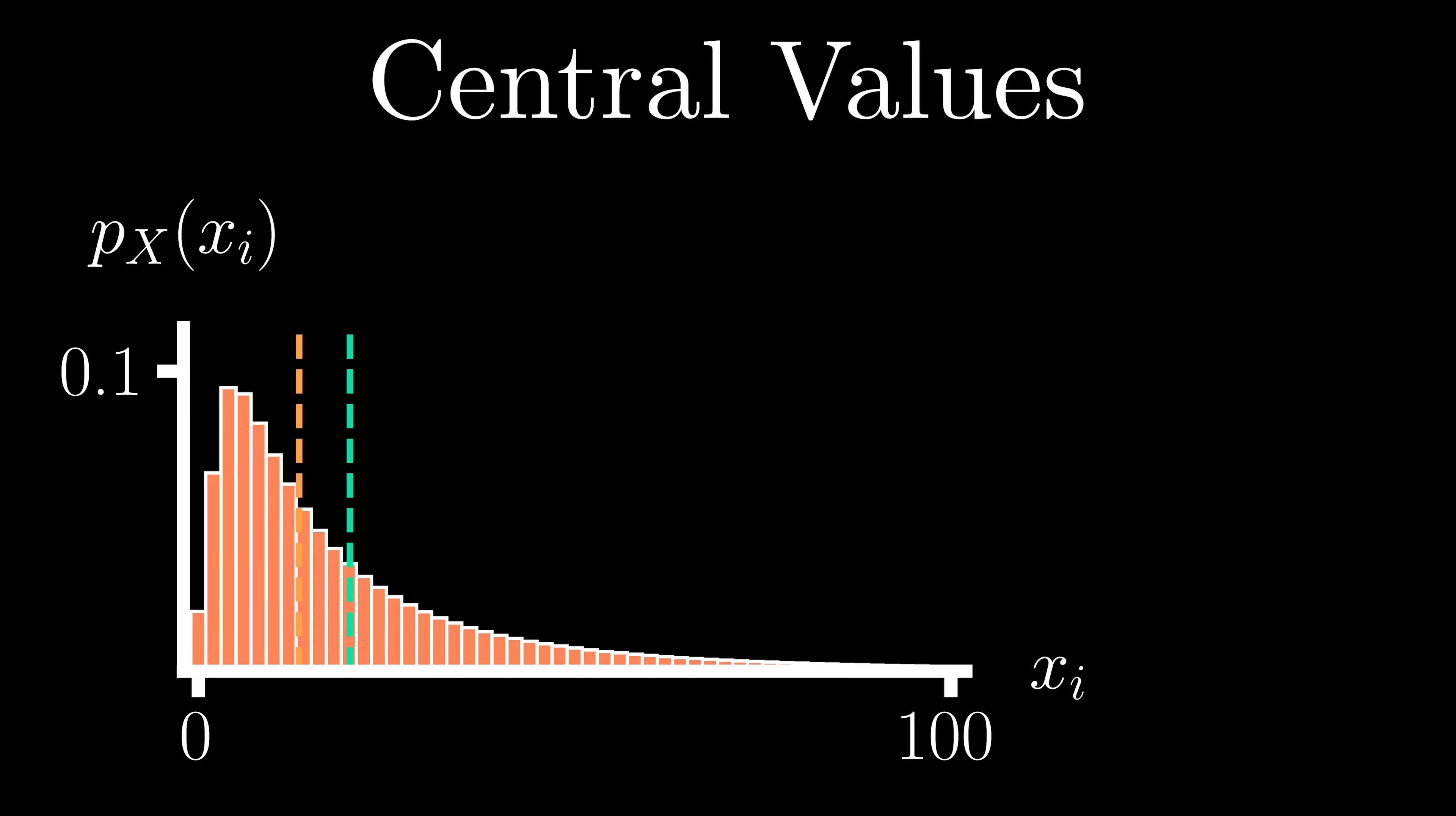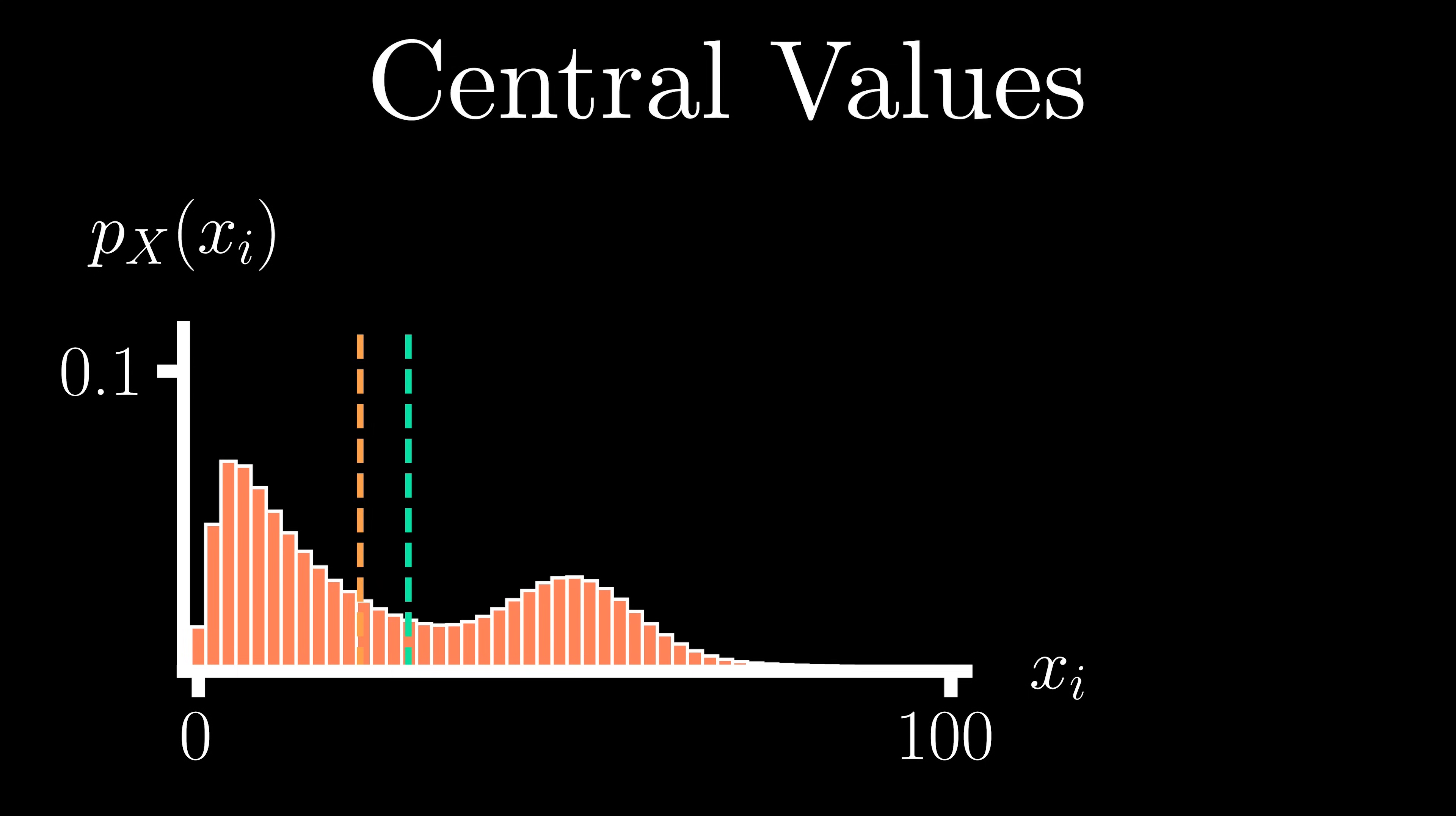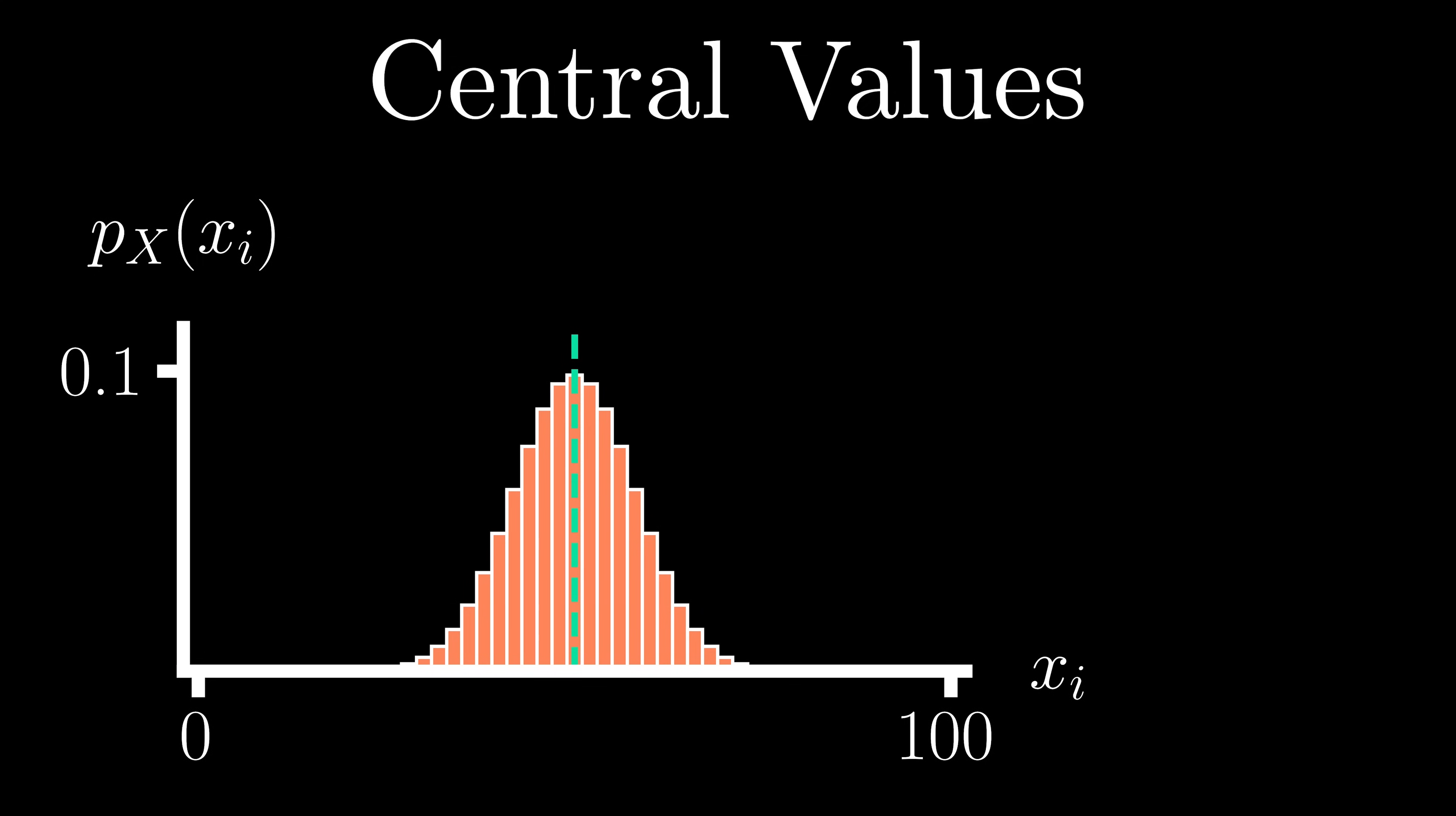As you can see here, the mode, median, and mean of a random variable can all differ. This is particularly the case for an asymmetric distribution. However, for more symmetric distributions, it is possible for all three of these values to be the same.